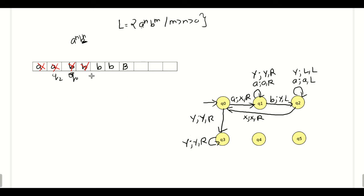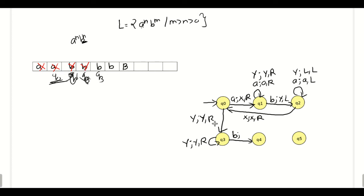At last, q3 will see y, and then q3 will see b. Previously, from state q3, if we see a blank symbol we reach the final state. But here we have to ensure that at least one additional b remains in the tape. So from state q3, it is possible to see a single b. It is better to keep b as it is so that in the final output we can show that the number of b's are greater than the number of a's.